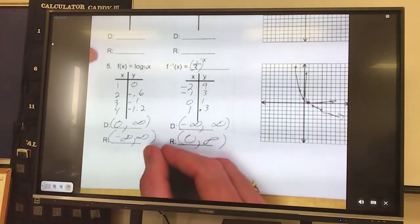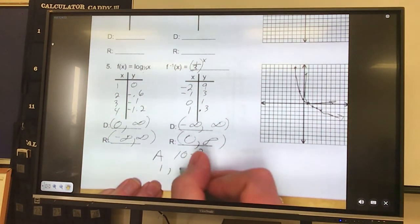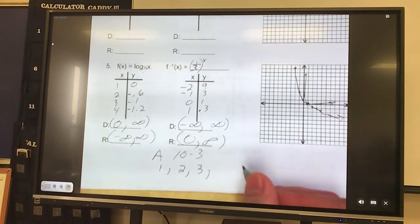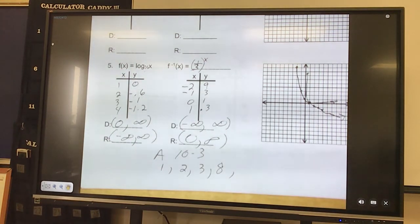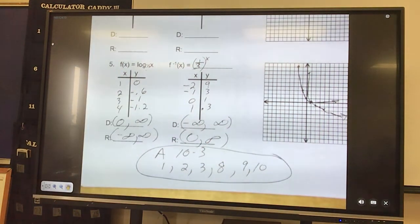You're going to do a 10-3. On 10-3 you're going to do, let's do a couple of each of those. First one's going to be just converting them. So those are fast, quick, easy ones. Let's do 1, 2, and 3. Then we're going to go number 8, let's do 9 and 10. That concludes notes for 10-3.